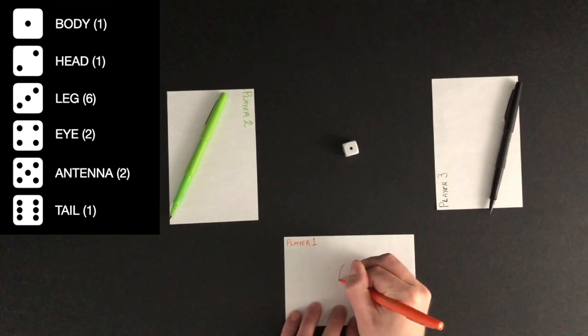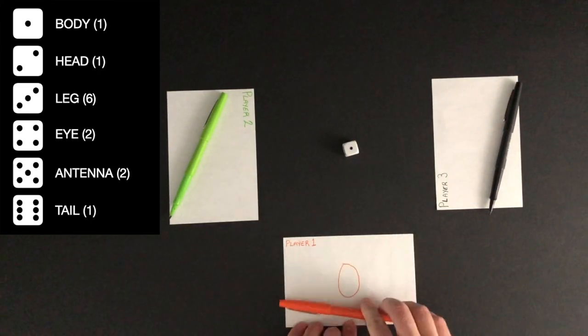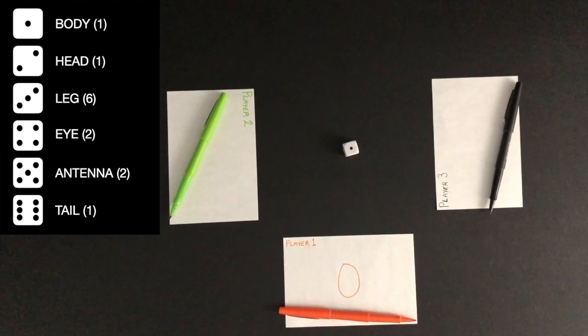Once a player has the body, a head, leg, or tail can be drawn. The player must have a head drawn before being able to draw the eyes or antennae.